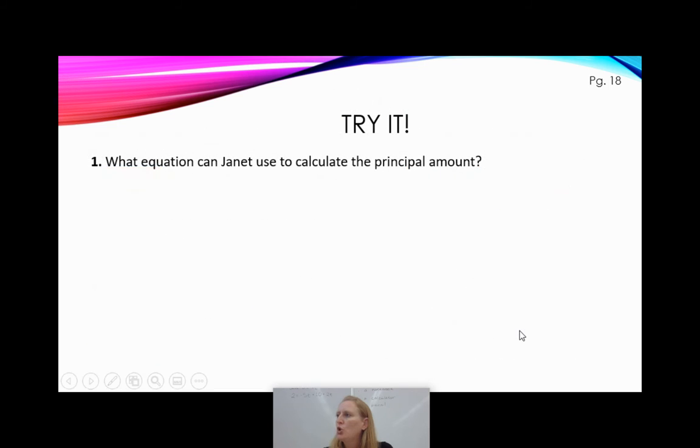So when she writes the equation this way, she can use what she knows. She knows the interest. She wants to earn a certain amount of interest. She knows the principal amount. She knows how much she's put in the account. And she knows the interest rate. And so now that she knows those things, she can just plug them in and calculate how long it's going to take to earn that much money. Nice. So what if instead, what equation can Janet use to calculate the principal amount? So this is the try it number one down on page 18. Go ahead, hit pause, see if you can solve for P, and then hit play when you're ready to check your work.